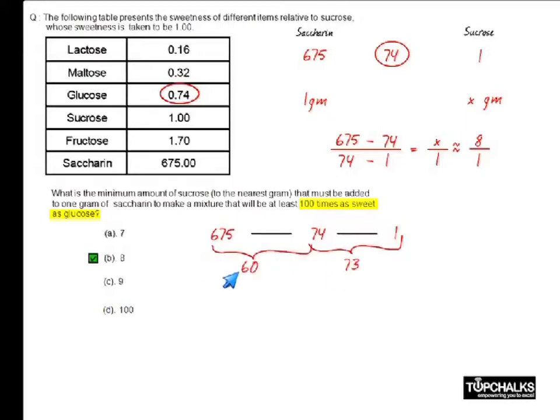So the ratio of these distances, if you take it approximately to the nearest gram, is 8 is to 1. If the ratio of distances is 8 is to 1, the ratio of the quantity that you will use will be 1 is to 8. So for every 1 gram of saccharide, you would need about 8 grams of sucrose. Even in this case, the answer happens to be 8.